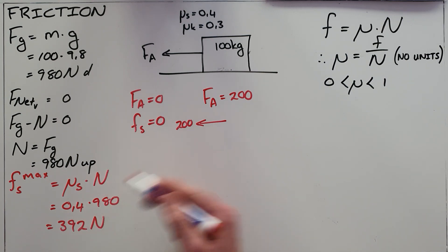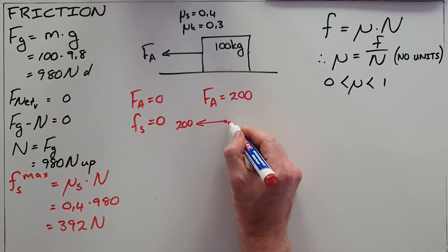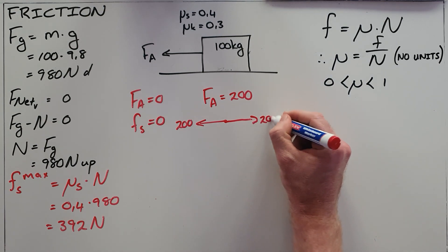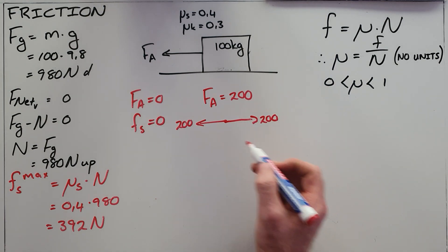As we can see, that 200 newton force is not great enough to overcome the static friction maximum, which means that static friction reacts by only exerting a 200 newton frictional force.